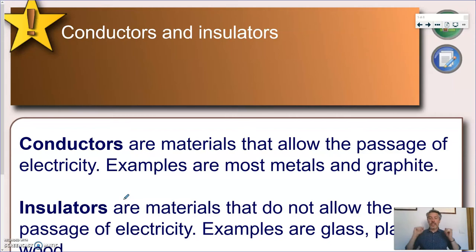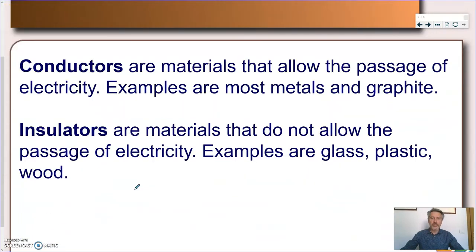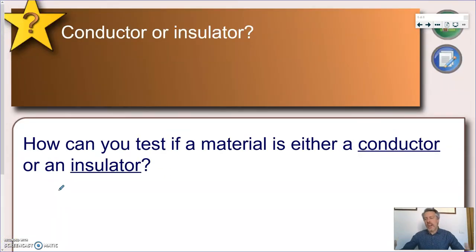I'm using a very strict black and white kind of division into conductors and insulators. Let's stick to this definition for now. So conductors are materials that allow the passage of electricity. Examples are most metals and graphite. Insulators on the other hand are materials that do not allow the passage of electricity. Examples are glass, plastic, wood, or rubber.